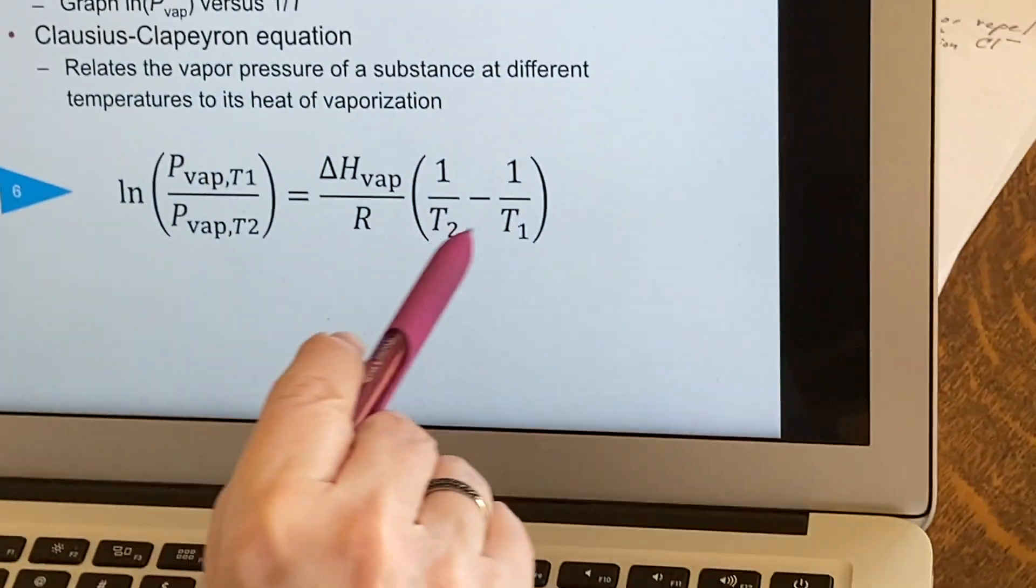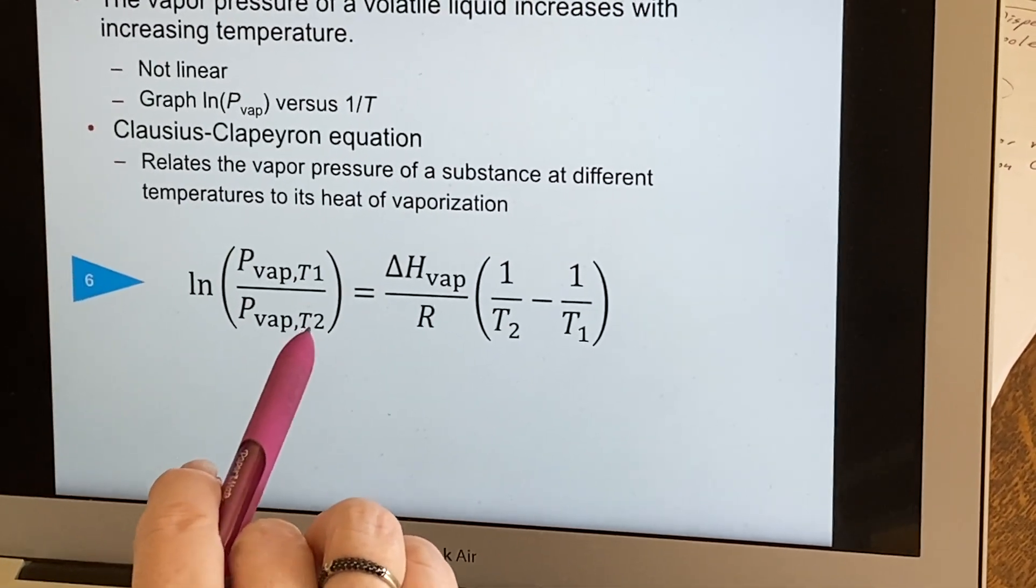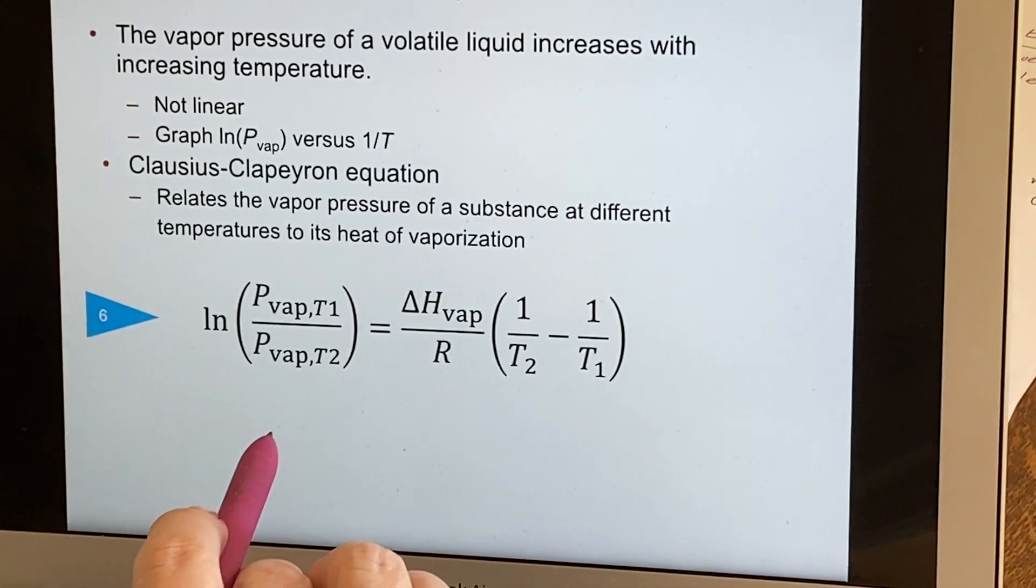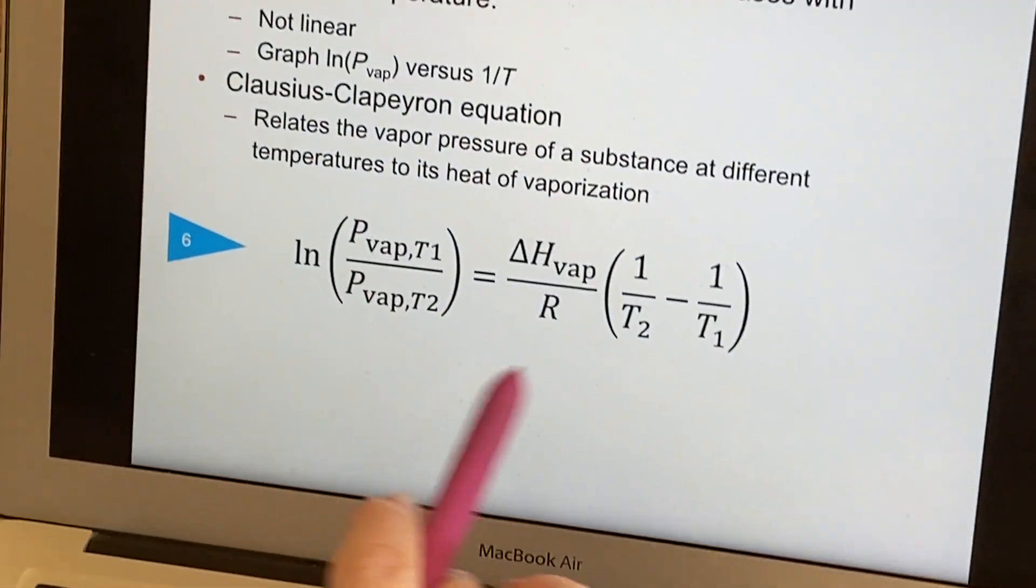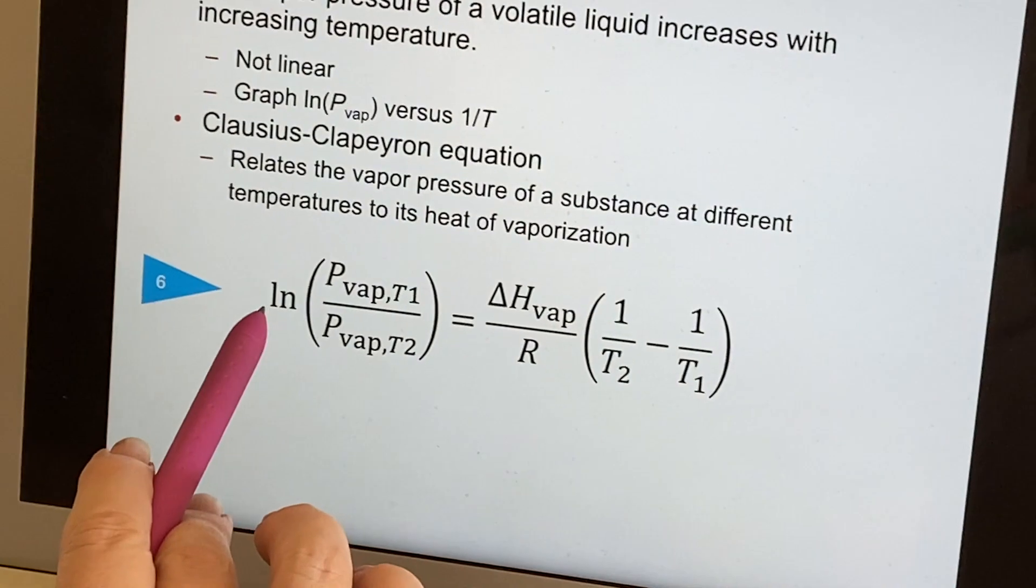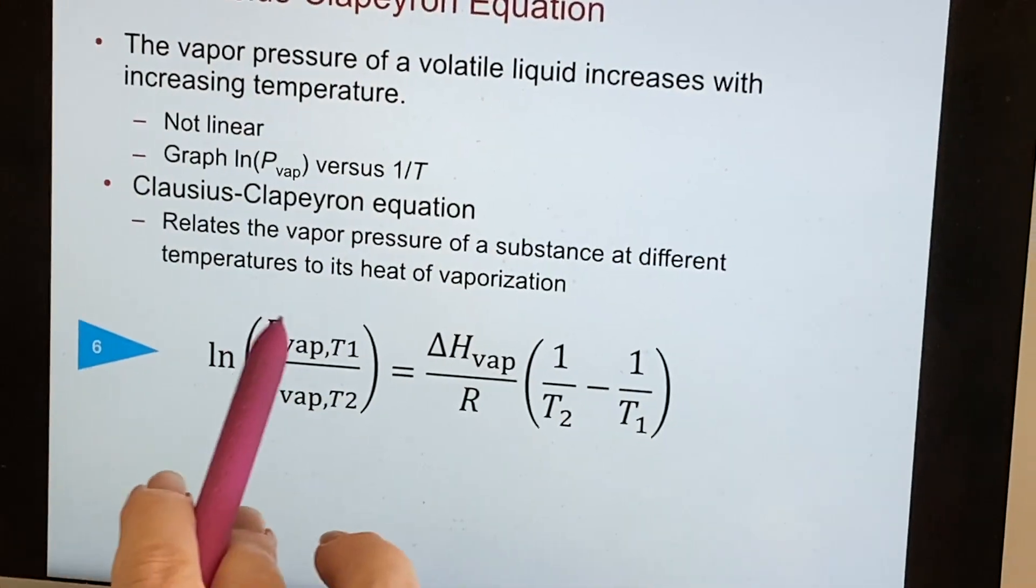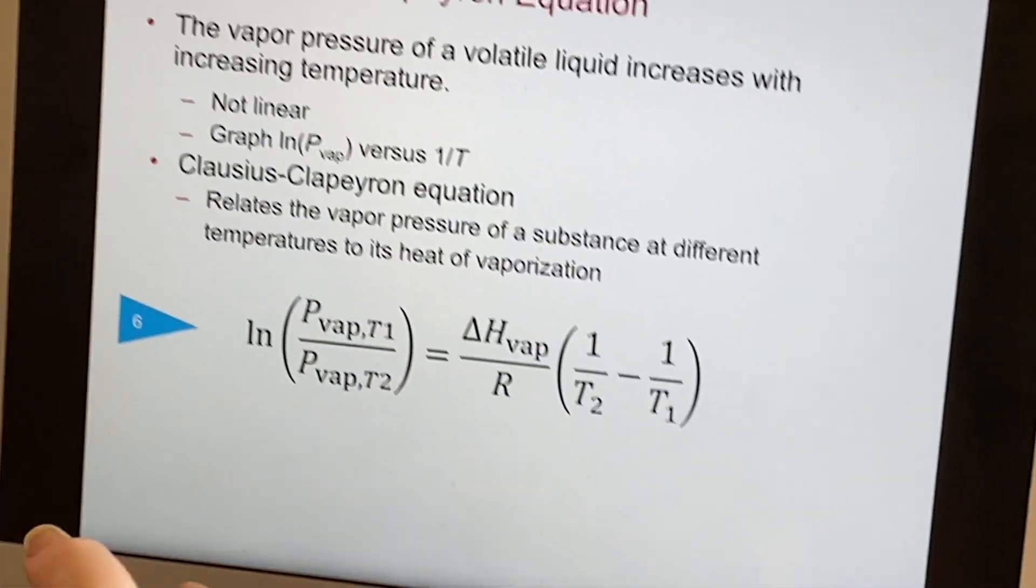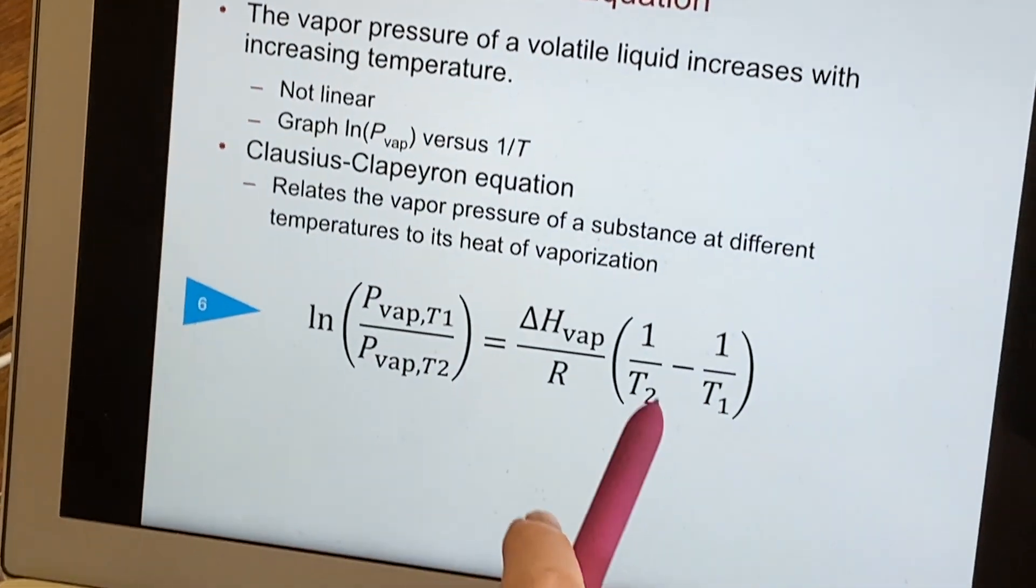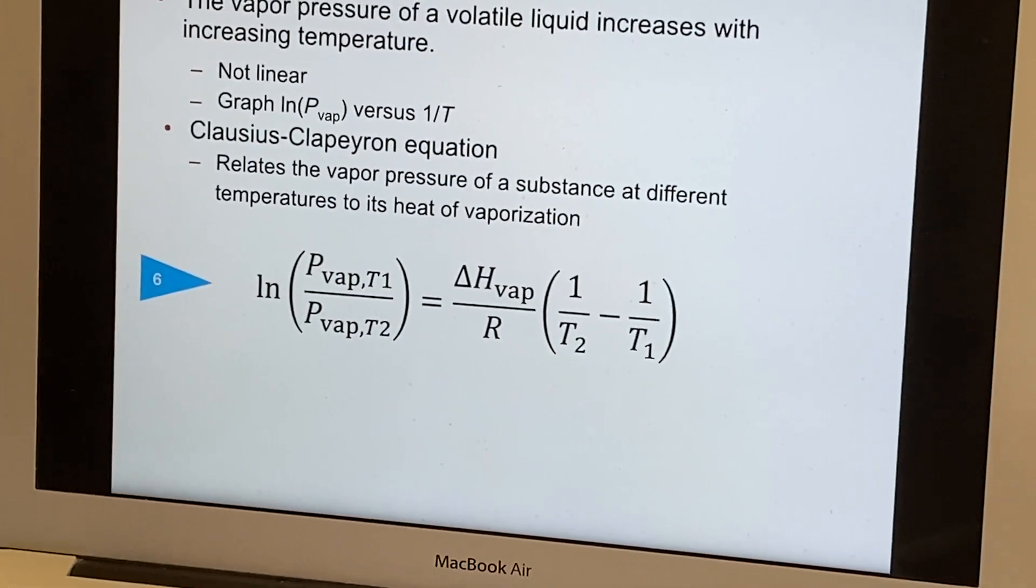And this would be the form that you would have used if you were doing a point-slope form. A point-slope form would be like this, because when we do a logarithm of something that's divided, it would be the same as logarithm of the top minus logarithm of the bottom. So that's a difference, and that's what you would see in a point-slope form.